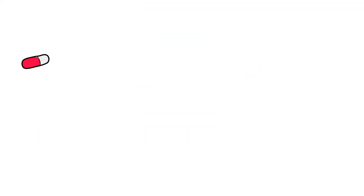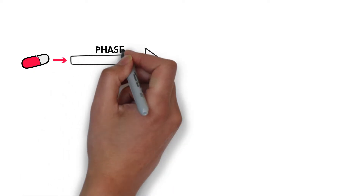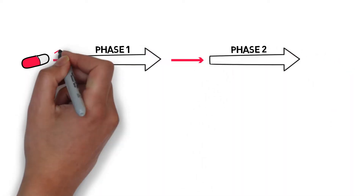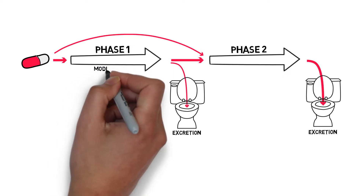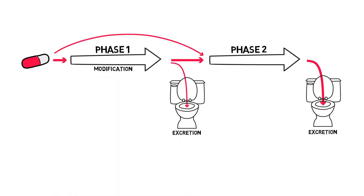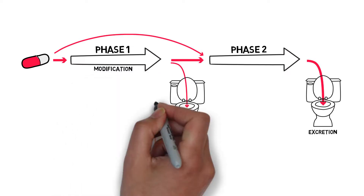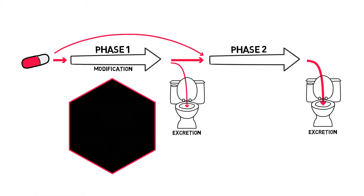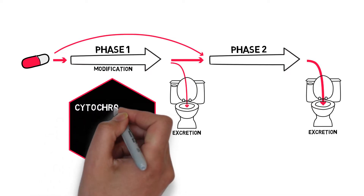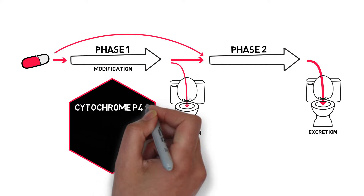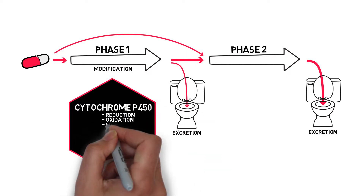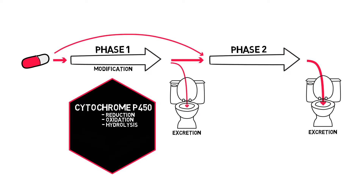Metabolism happens in two phases, though some drugs only use phase 2. Phase 1 is the modification phase, and it's governed by cytochrome P450. This is a group of metabolic enzymes that break down xenobiotic compounds like drugs through reduction, oxidation, or hydrolysis. It's responsible for 75% of all metabolism.